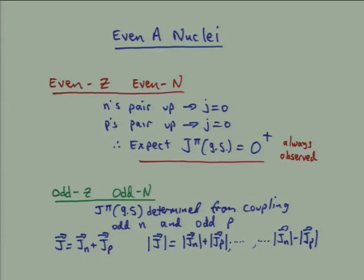There are many different potential outcomes from adding these two vectors. The magnitude of the resulting spin J for the nucleus can range from the algebraic sum of the magnitudes of the neutron and proton spins down to their difference, with every possible step of one h-bar in between. So you can barely predict with 100% certainty what the spin of an odd-odd nucleus will be. The empirical rule of thumb is to find the value where the intrinsic spin of the neutron and the intrinsic spin of the proton are parallel to one another.